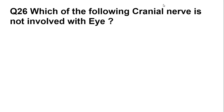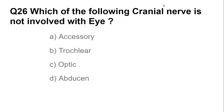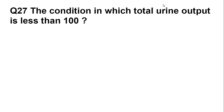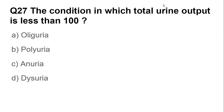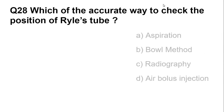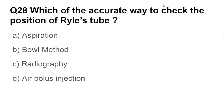Question number twenty-six: which cranial nerve is not involved with the eye? The accessory nerve is the cranial nerve not involved with the eye. Question number twenty-seven: the condition in which total urine output is less than 100 ml is called anuria. Question number twenty-eight: the most accurate way to check the position of a Ryles tube is radiography.